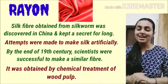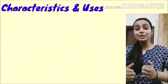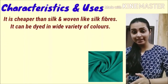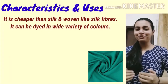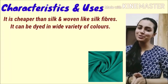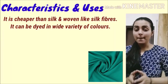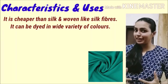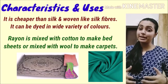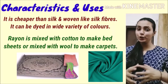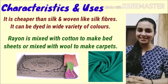Ab aap bolenge wood pulp toh natural hai, toh phir ise artificial ya synthetic fiber kyun kaha jata hai? Because ultimately yeh wood pulp ko use karke factories mein banaya gaya, naturally obtain nahi kiya. Yeh fiber silk se sasta bhi hai, plus silk ki tarah different varieties mein use ho sakta hai — cotton ke saath milke bedsheets banata hai, aur wool ke saath milke carpets banata hai.